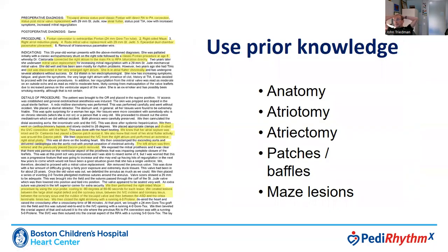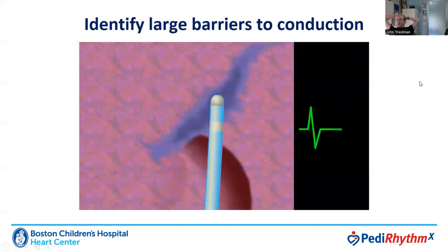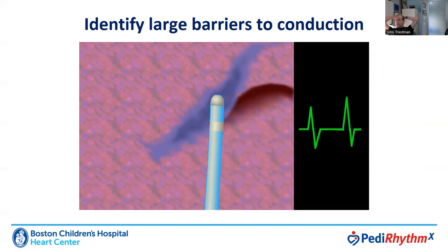The first thing we do when caring for these patients is use prior knowledge from the patient's own history. We think about their anatomy, where and how the atriotomy was performed, any patches or baffles inserted in the atrium that may affect conduction sequence or our ability to access the atrium, and whether the surgeon created maze lesions with cryoablation or other technology. Once in the heart, we try to identify large scar barriers to conduction. Placing a bipolar catheter across a scar, we can identify two closely-spaced discrete electrograms to annotate an area as part of a confluent scar.